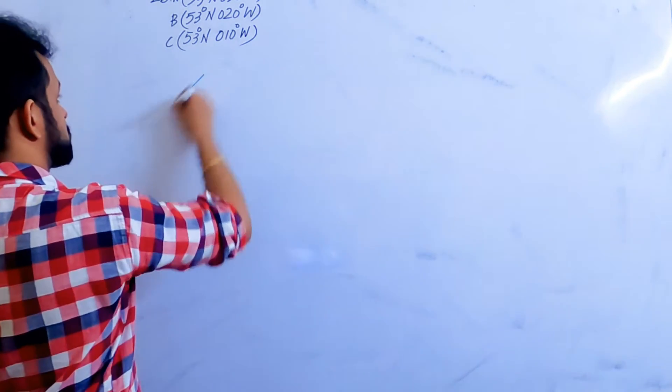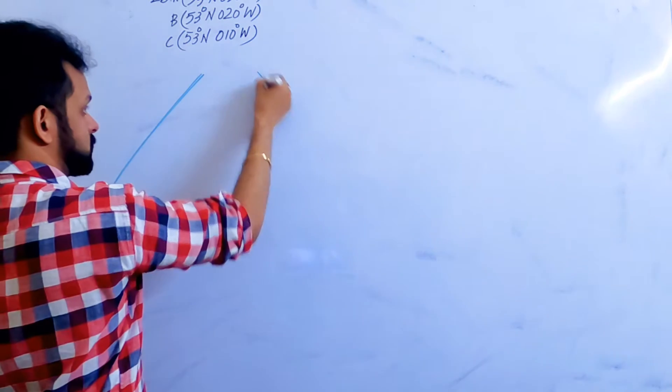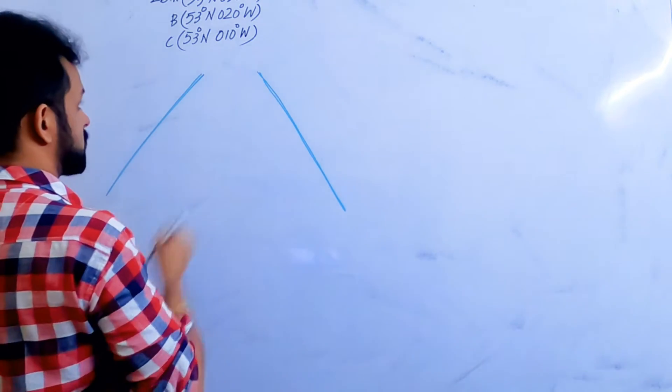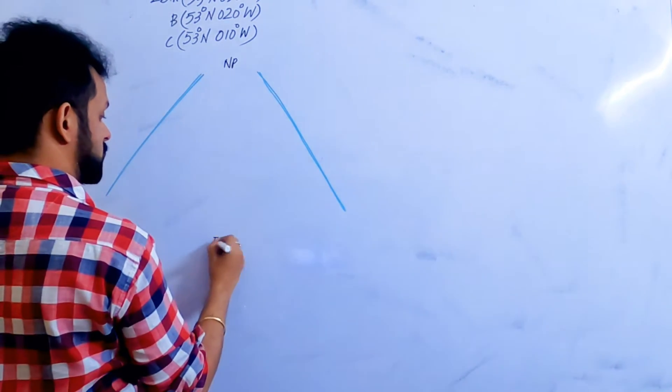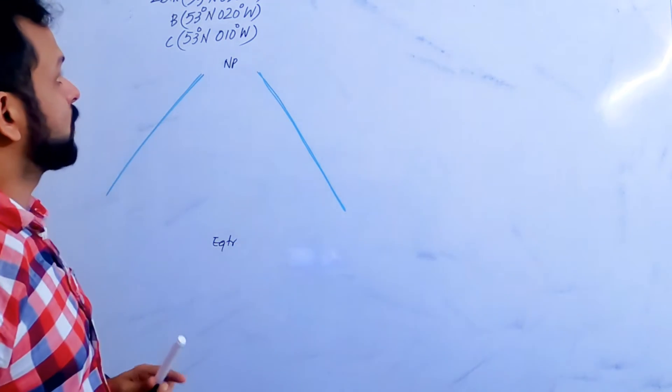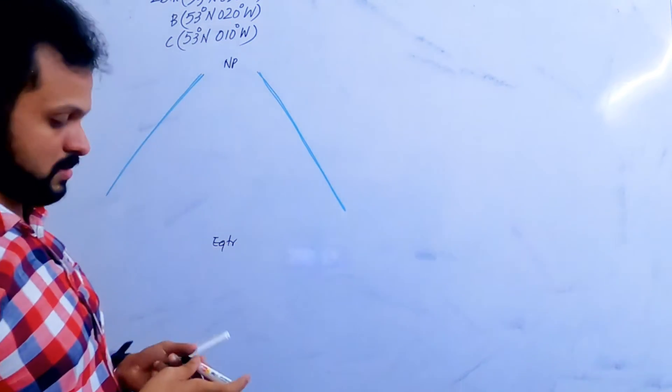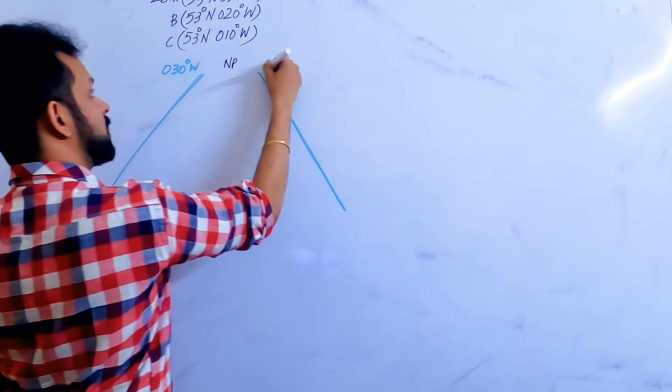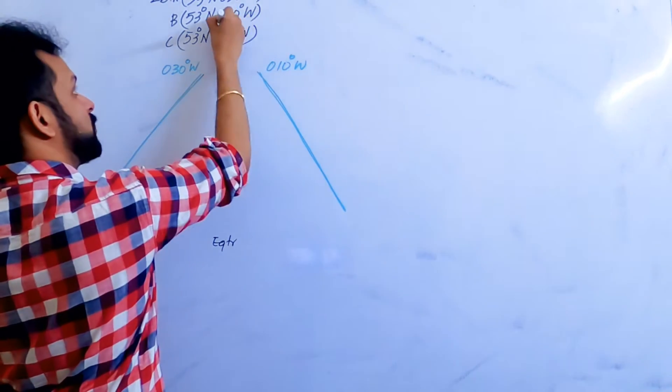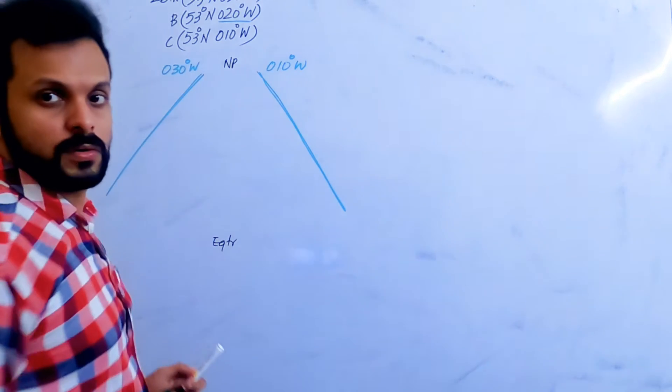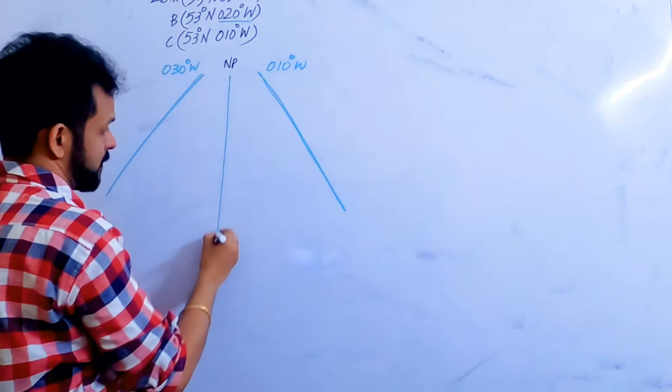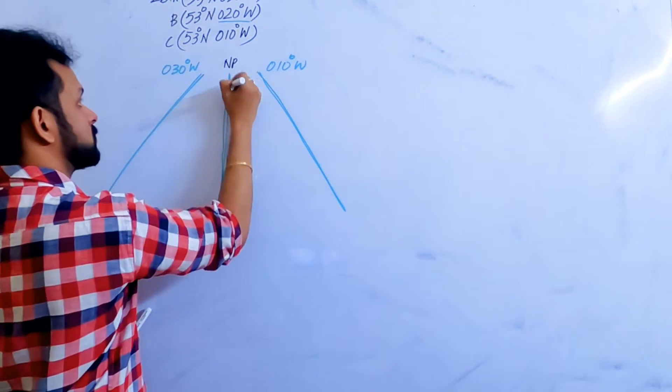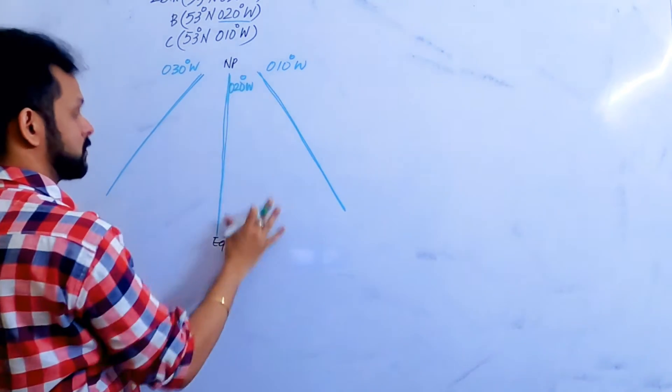We have to draw three different meridians here and we are going towards north pole. This is the north pole, equator. Bottom is the equator. Now, what can you say about 30 degree west? We can take towards the west direction. And this will be 10 degrees west. And 20 degrees west will be in between the two meridians.